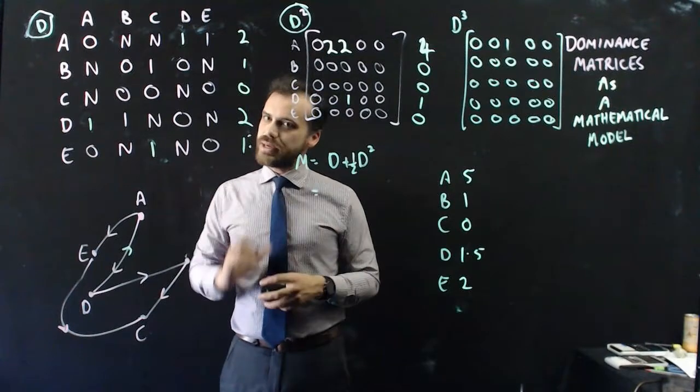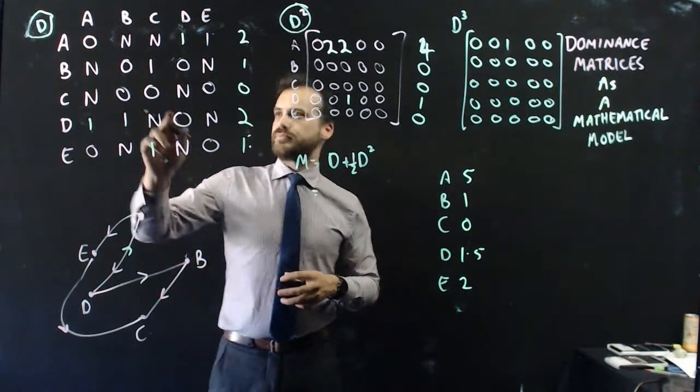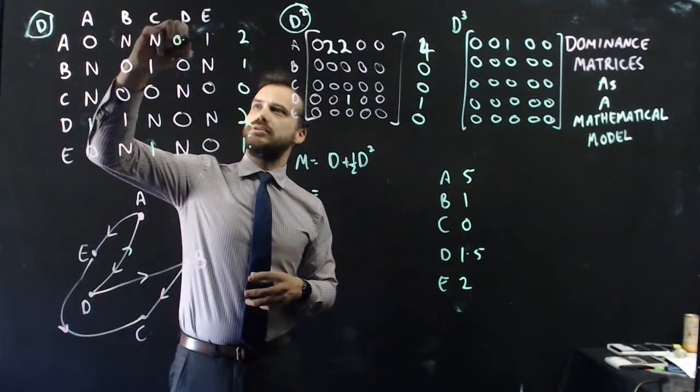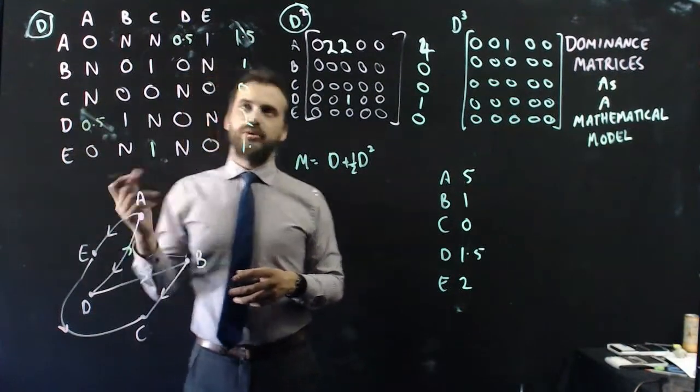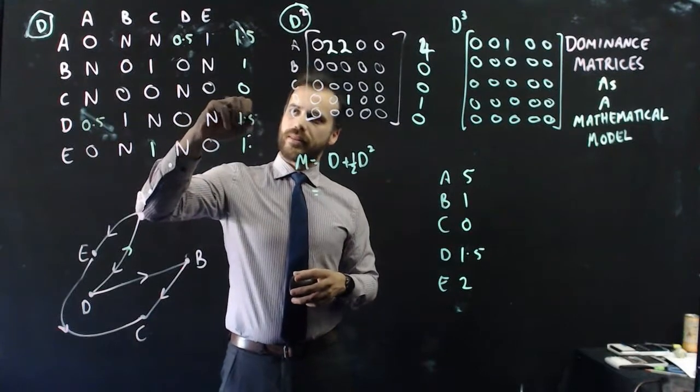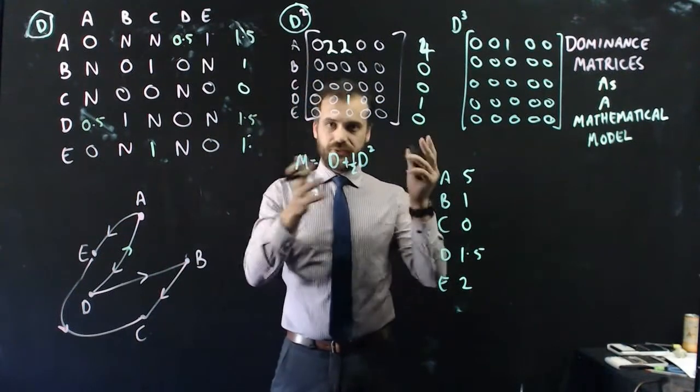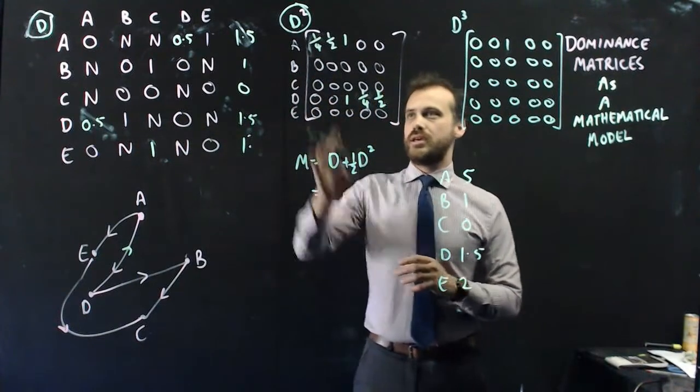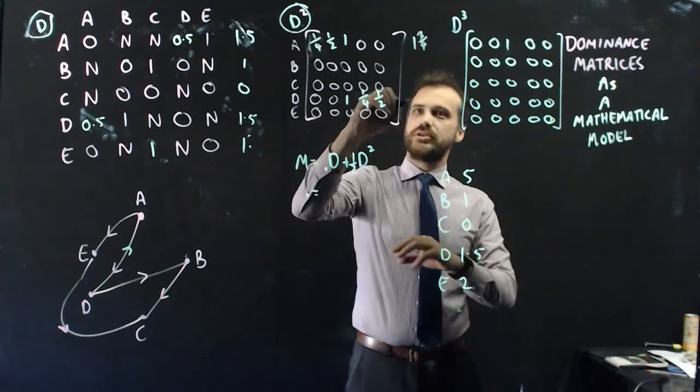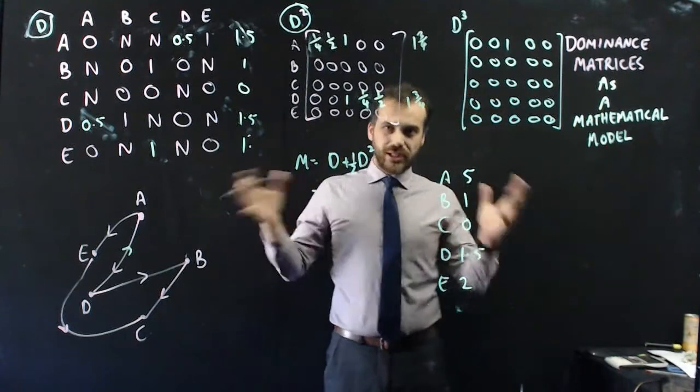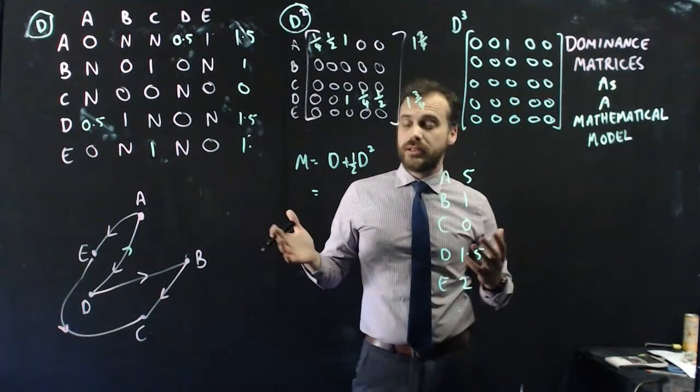So just something to keep in mind here, maybe there might be a different way to do this. Maybe instead we could say, right, if you get a draw, it's not worth one, it's worth 0.5. It's not worth one, it's worth 0.5. Okay. And now that has the effect, if we square that matrix now, that's going to do some weird stuff to this matrix. Okay, and you can see that those decimals have carried through to here, and A gets one and three quarters from the second order matrix, and D also gets one and three quarters from the second order matrix. So now it's really hard to split A and D. Hmm, maybe, maybe one of those wins happened away from home, maybe they didn't.